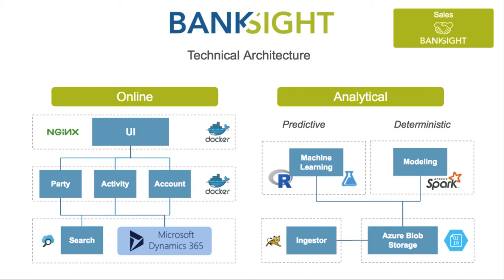Applications like party, activity, and financial accounts are packaged into independent Docker containers. The data layer utilizes Azure platform services such as Dynamics 365, Blob Storage, and Elasticsearch. This microservice architecture allows scaling of each function independently.